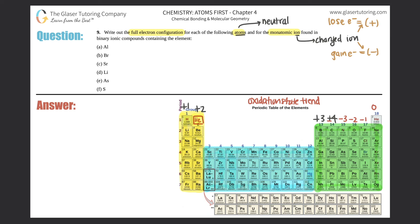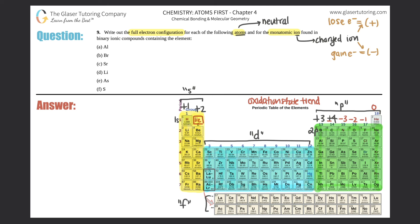We have to write the full electron configuration — no shorthand — for both the atom and the ion. Remember: the yellow elements are in the s subshell, green is p, blue is d, and if we go further down, that's where the f electrons are. The s's start with 1s, the p's start with 2p, the d's start with 3d, and the f's start with 4f.